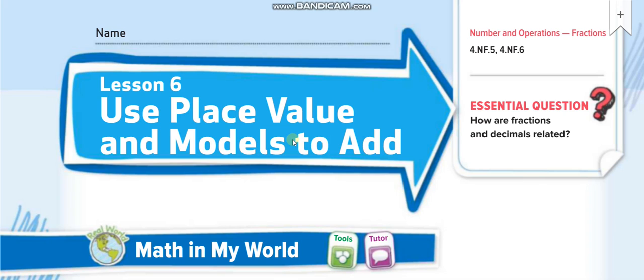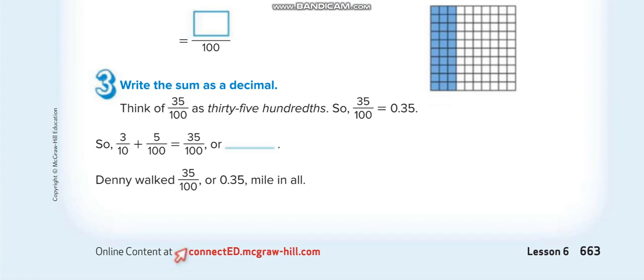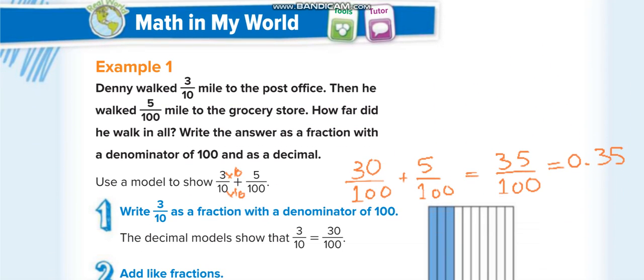Hey everyone, welcome back to my channel, Learn Math with Mr. Saad, for another video lesson. Today's lesson for Grade 4, Chapter 10, Lesson 6: Use Place Value and Models to Add. Page number is 663. In this lesson we will add fractions like here if you see 3 over 10 plus 5 over 100.